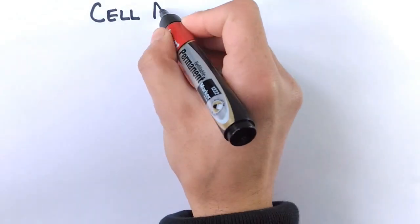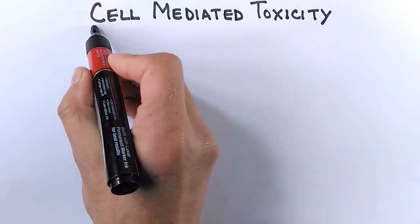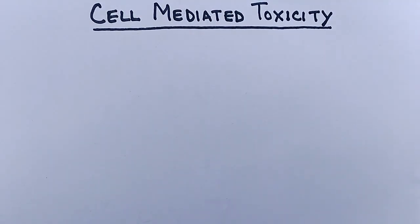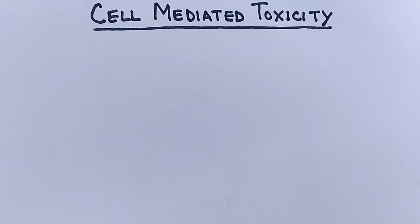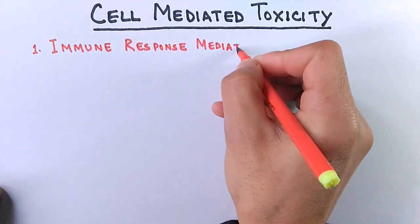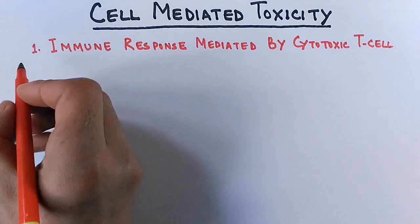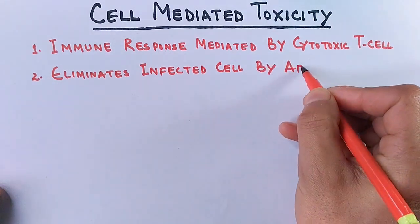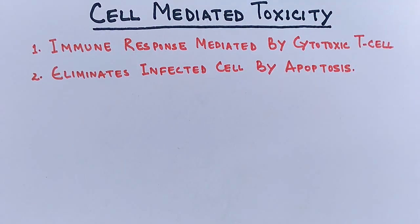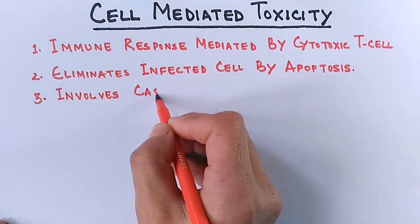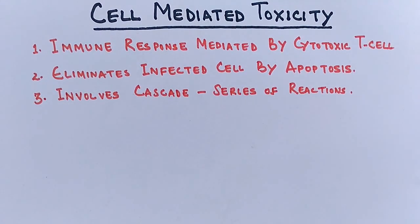In this video we will be discussing cell-mediated toxicity. It is an immune response mediated by our immune system without using any antibodies. Here, cytotoxic T cells — also called CD8-positive cells — are used to eliminate the target infected cell by apoptosis, without the use of chemokines or other immune chemicals. It involves a cascade — a series of reactions — where the inactive form gets activated into the active form.